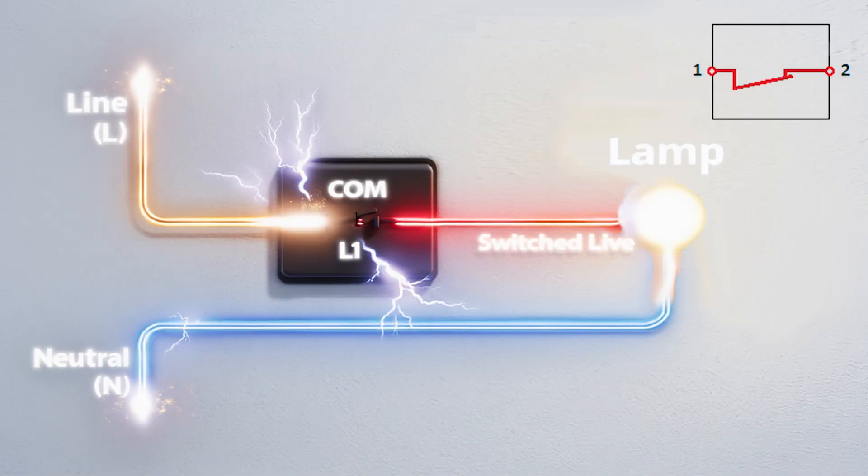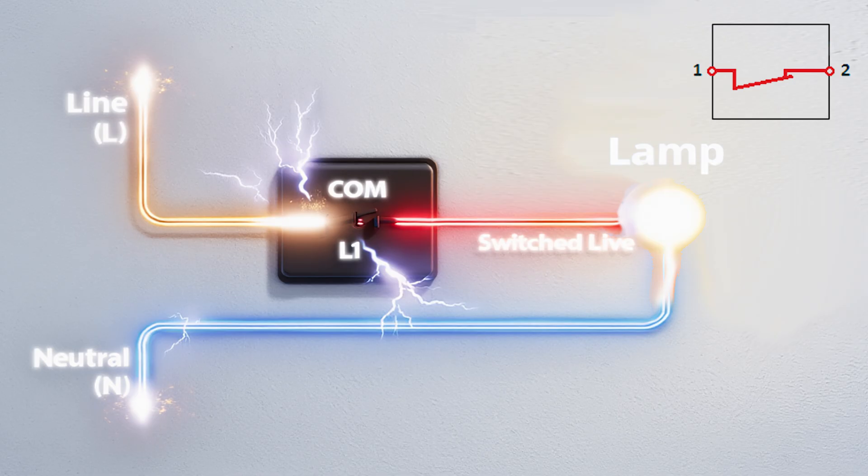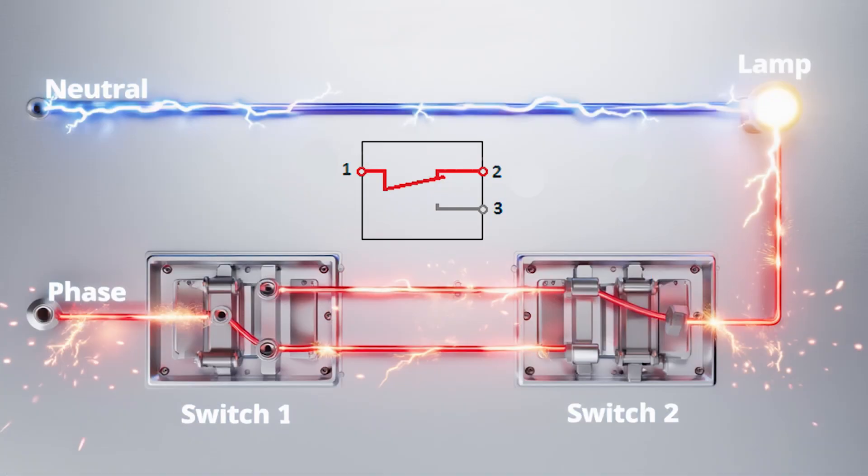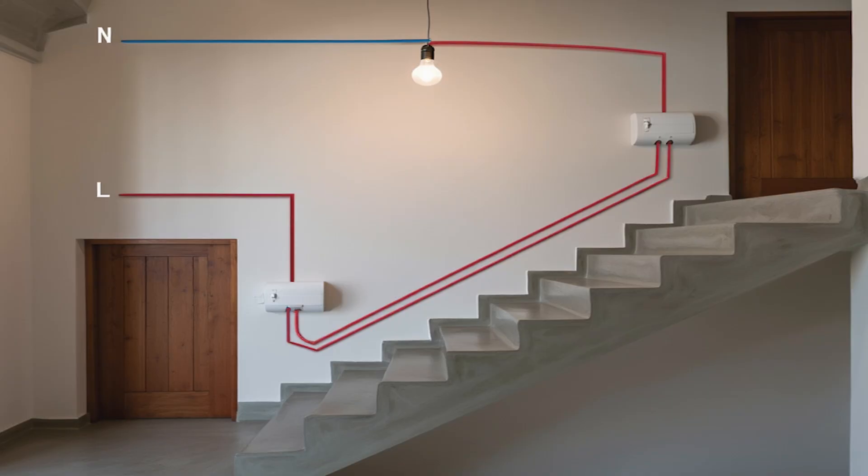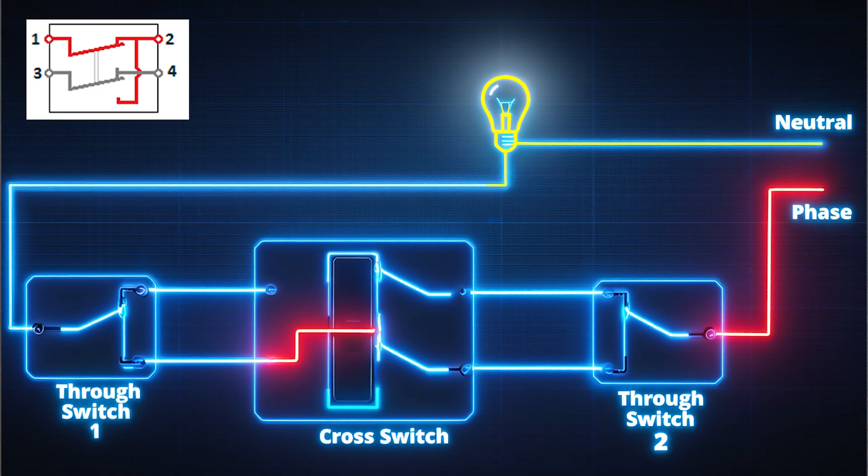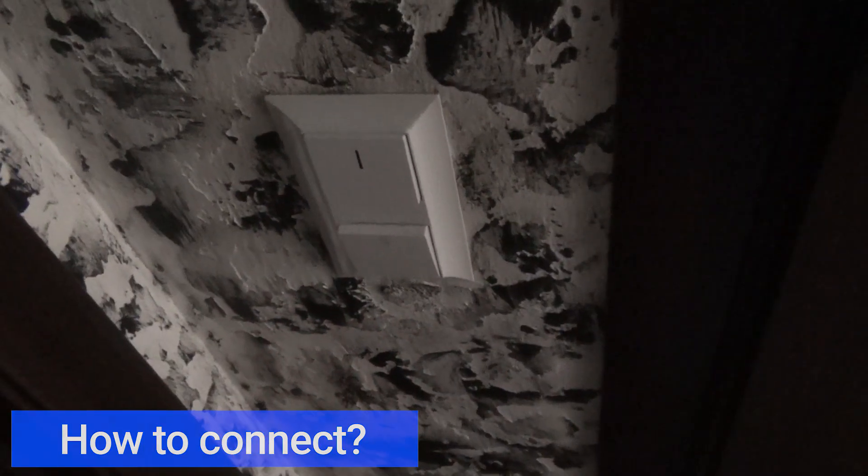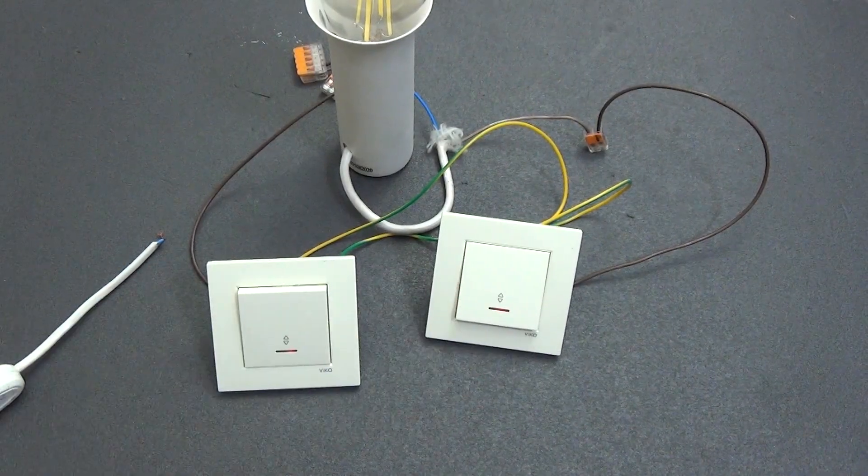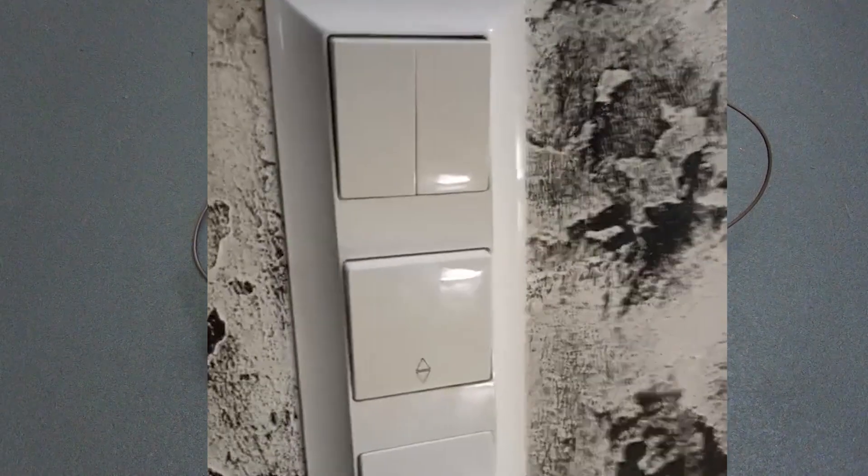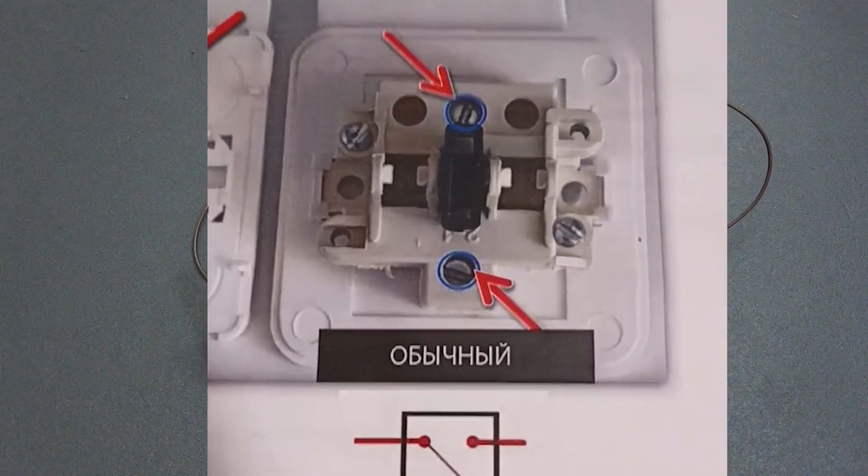The wiring diagram: the first is a simple switch, the second is a pass-through, and the third is a cross, intermediate. If you make a scheme not of two, but of three or more control points, a cross switch with four contacts is added between them, and everything works exactly the same. I will not pick out the already installed switches from my wall. I bought them separately for testing. I have already made a video about how they work and their detailed diagrams in this video.